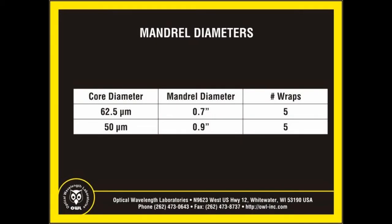Since multimode fibers come in two common core sizes, each core size requires a different mandrel diameter. According to most popular cabling standards, the official mandrel diameter is 0.7 inches for 62.5 micron core and 0.9 inches for 50 micron core, each requiring five non-overlapping turns on the mandrel. Some companies have developed officially sized mandrels specifically for this purpose. However, if these specially designed mandrels are not available, it is also acceptable to use any smooth, even cylinder as long as it is close to the official mandrel diameter. Wooden dowels or PVC pipes are suitable alternatives, since these materials are inexpensive and readily available at most hardware and home improvement stores. The important thing to remember is that you don't want the mandrel to be smaller than the official size, but slightly bigger is okay.